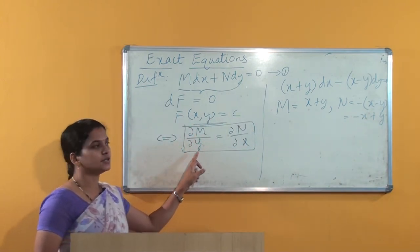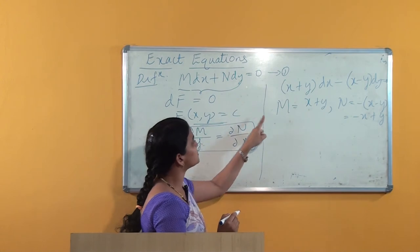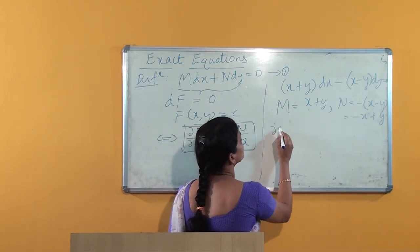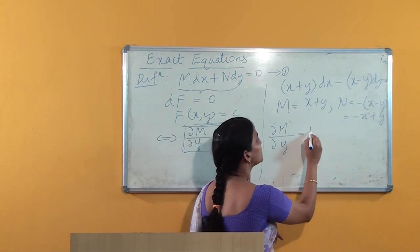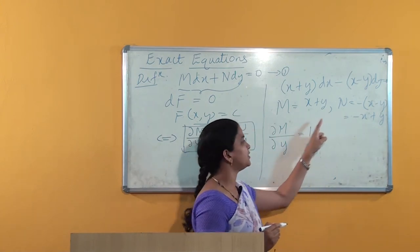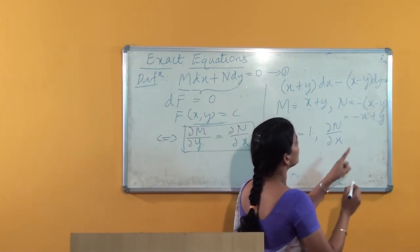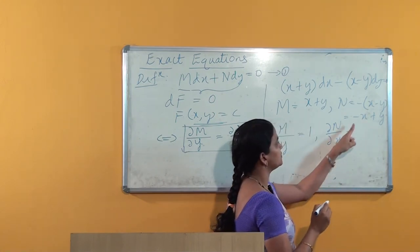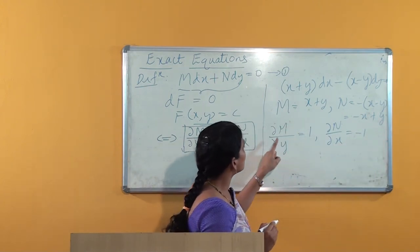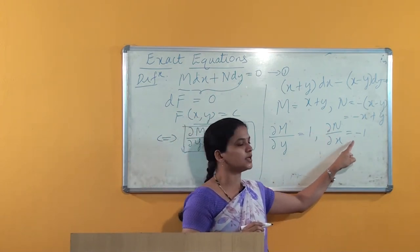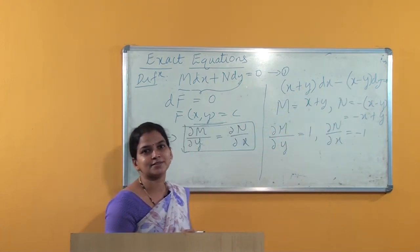Now we check the condition: ∂M/∂y and ∂N/∂x. The partial derivative of M with respect to y: x is constant, derivative of y is 1, so ∂M/∂y = 1. The partial derivative of N with respect to x: derivative of −x is −1, and y is constant so 0, giving ∂N/∂x = −1. Since ∂M/∂y = 1 ≠ −1 = ∂N/∂x, the given differential equation is not an exact equation.